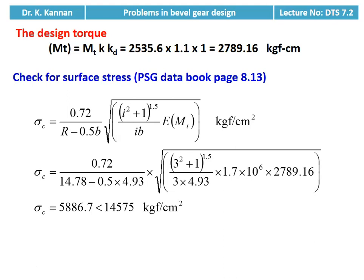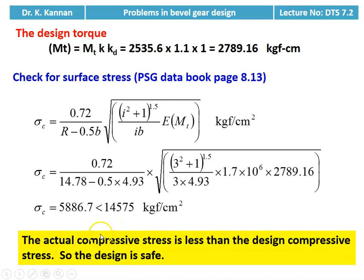We check for surface stress. Equation from page 8.13: σC = 0.72 / (R − 0.5b) × √[(i² + 1)^1.5 / (i × b × E × MT(design))]. Substituting: 0.72 / (14.78 − 0.5 × 4.93) × √[(3² + 1)^1.5 / (3 × 4.93 × 1.7 × 10⁶ × 2789.16)]. Calculating, σC = 5886.7 kgf/cm², which is less than 14,575 kgf/cm². The actual compressive stress is less than the design compressive stress, so the design is safe.